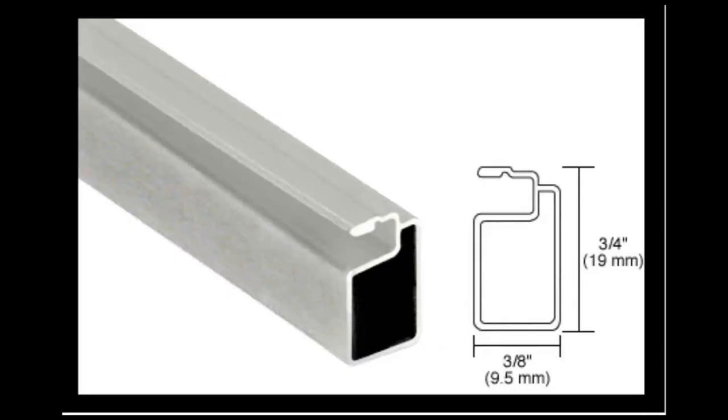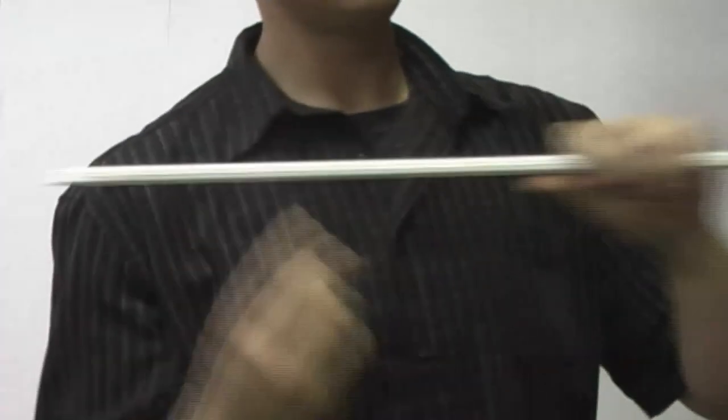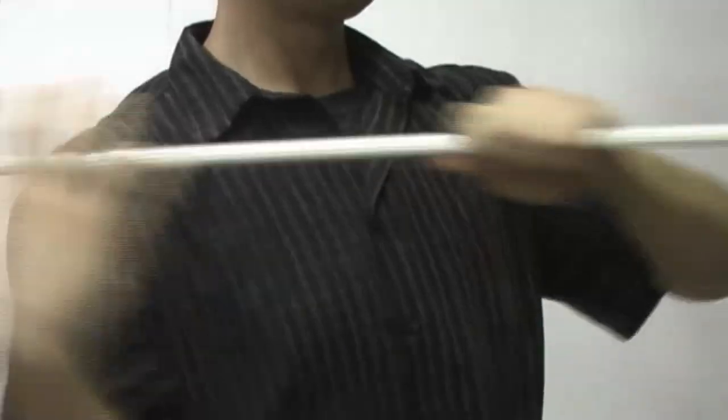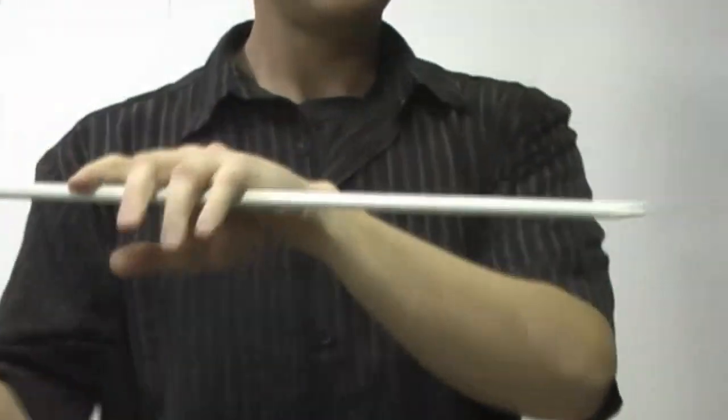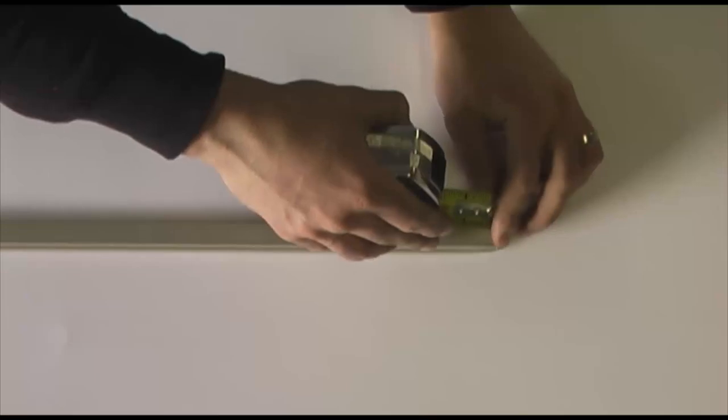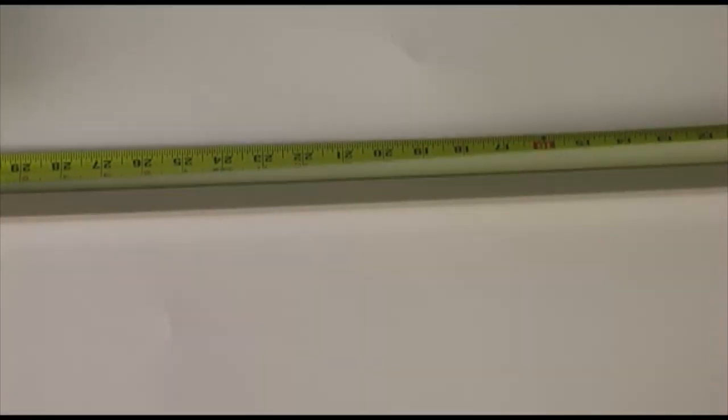When you first start manufacturing your screens, you're going to want to start with the screen frame. Our screen frame comes in twelve and a half foot sticks, which for a small fee can be cut down to make shipping easier. First of all, measure to the desired length you would like to cut your screen and mark it.